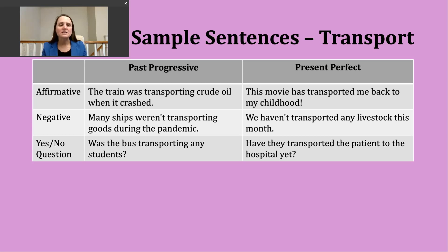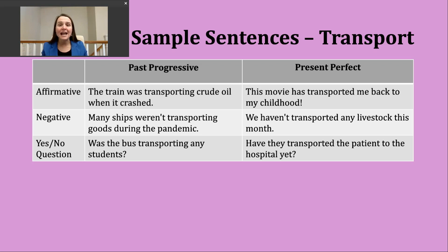Here's an example sentence: 'The train was transporting crude oil when it crashed.' The train is singular — like saying 'it' — so I have 'was,' then my -ing verb. It's carrying, it's moving crude oil from one place to another, and the interrupting action here is a crash. If I want to make a negative past progressive sentence, I need to pay attention to my subject and choose 'was' or 'were,' then 'not,' then the -ing form of the verb.